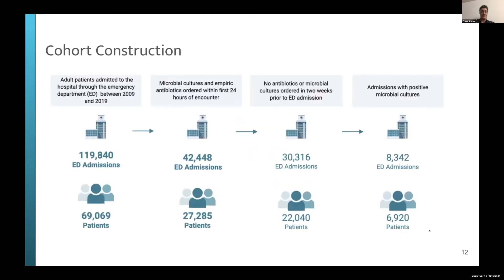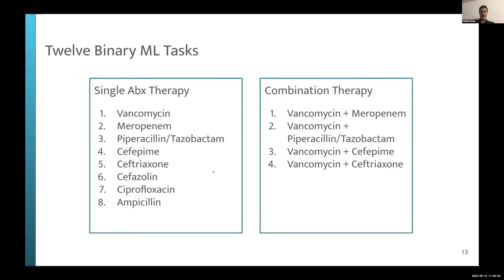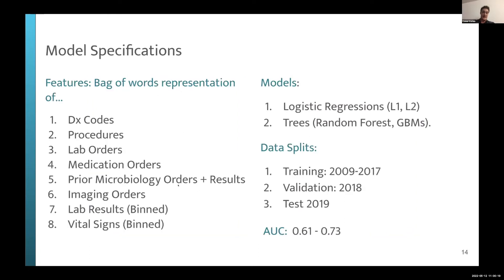We built a cohort of patients admitted through the emergency room who had microbial cultures and empiric antibiotics ordered within the first 24 hours — about 8,000 admissions. We trained 12 binary classifiers, each estimating the probability that a particular antibiotic regimen would work for a given patient, using microbial culture susceptibility results as labels. Models used bags-of-words representations of diagnosis codes, procedures, medication orders, lab results, and vital signs, achieving AUCs ranging from 0.61 to 0.73.